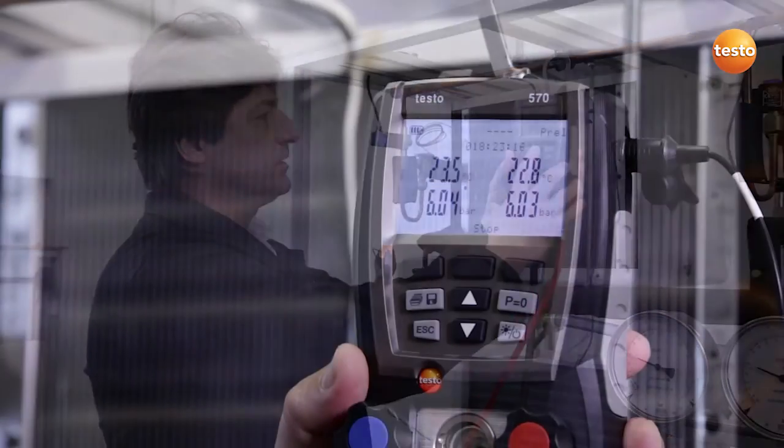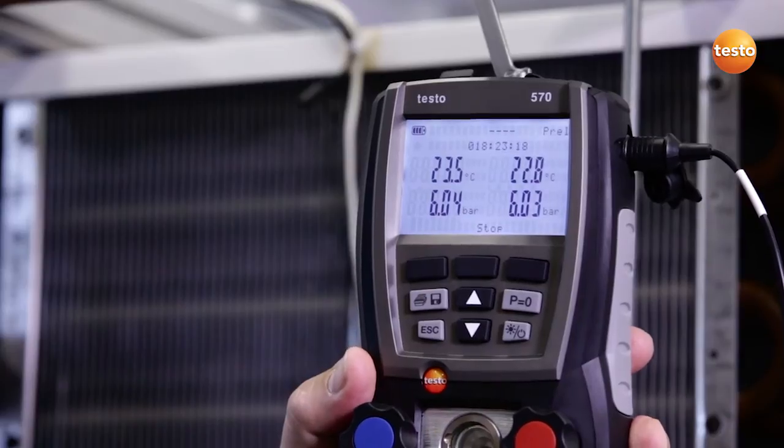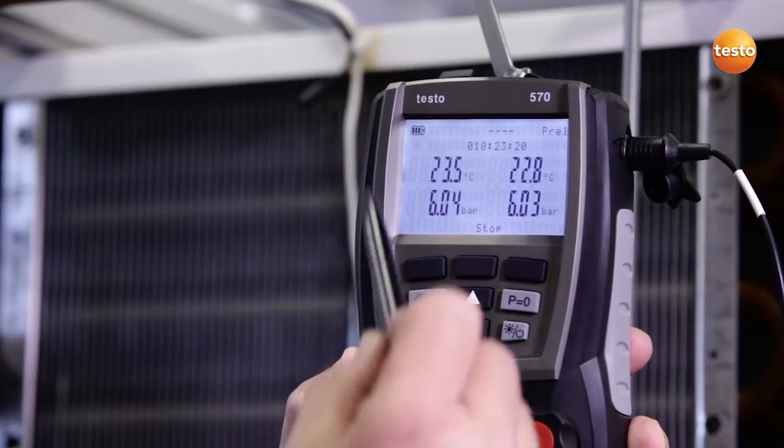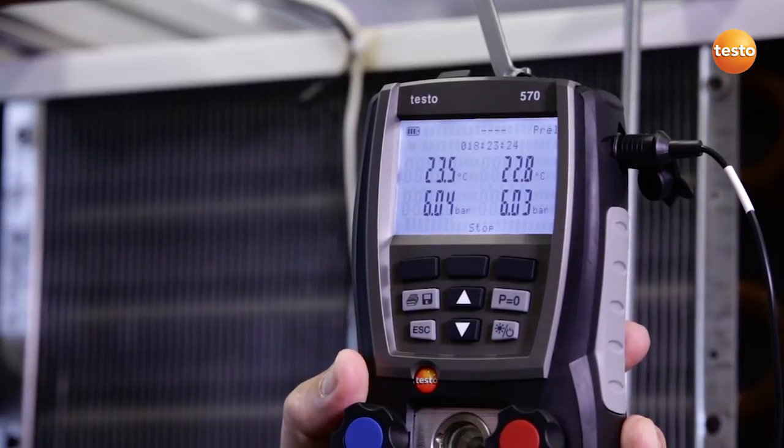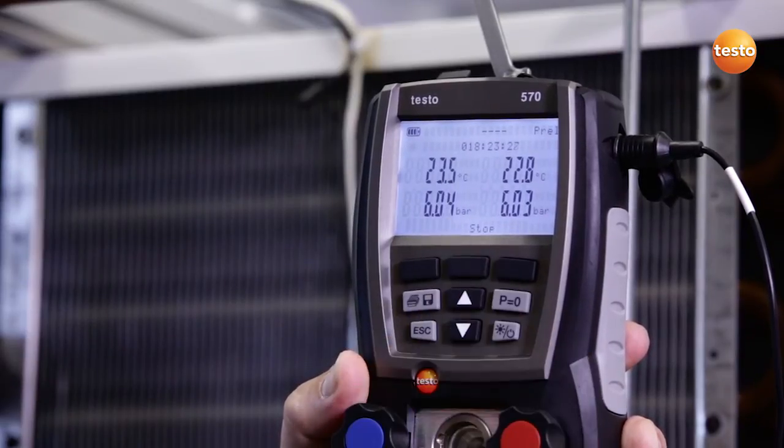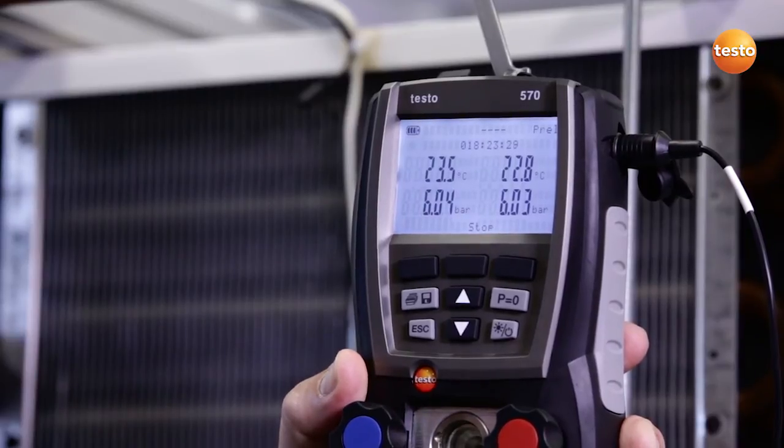The pressure tightness test has run overnight and we are now looking at the results. The display shows us the system pressure and the ambient temperature at the start of the test and the current value. The test lasted approximately 18 hours. Longer testing times would further increase the accuracy of the test.